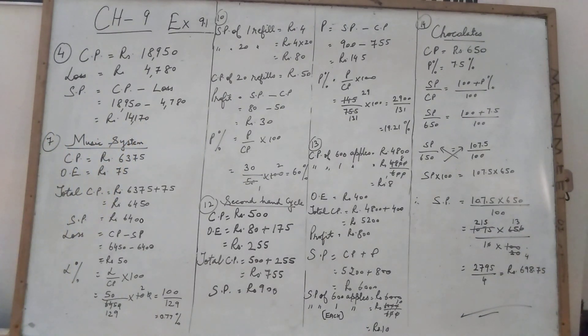Now children, fifth and sixth are same. Coming to the seventh one, see the question. Monica bought a music system for Rs. 6,375 and spent Rs. 75 on its transportation. She sold it for Rs. 6,400. Find its profit or loss percent.